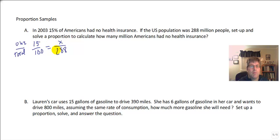And we know we can multiply the means and the extremes, but in this problem I'm going to go ahead and reduce 15 out of 100 right away. They're both divisible by 5, and that simplifies to 3 over 20 equals x out of 288.